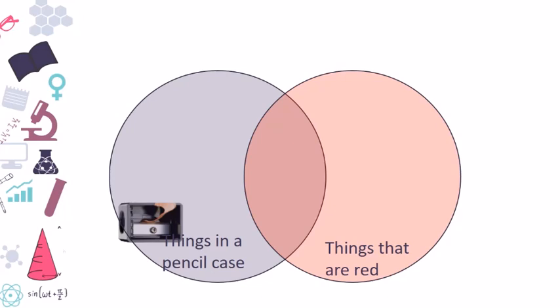The next object. Oh, an eraser, a rubber. Well, pencil eraser. There is a red color in it. It's also in the pencil case. So where we will put it? We will put it in the middle.